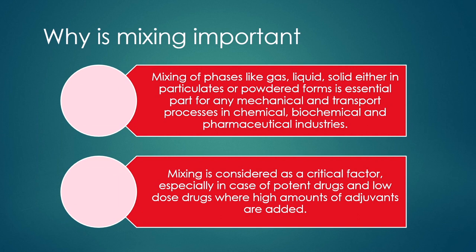Mixing is considered a critical factor especially in the case of potent drugs and low dose drugs, where high amounts of adjuvants are generally required to be added. In that case, mixing is important because the distribution of concentration of ingredients is important — if there is uniform mixing, then the concentration distribution in a tablet or any other form will be uniform, which can be obtained because of that uniform mixing.